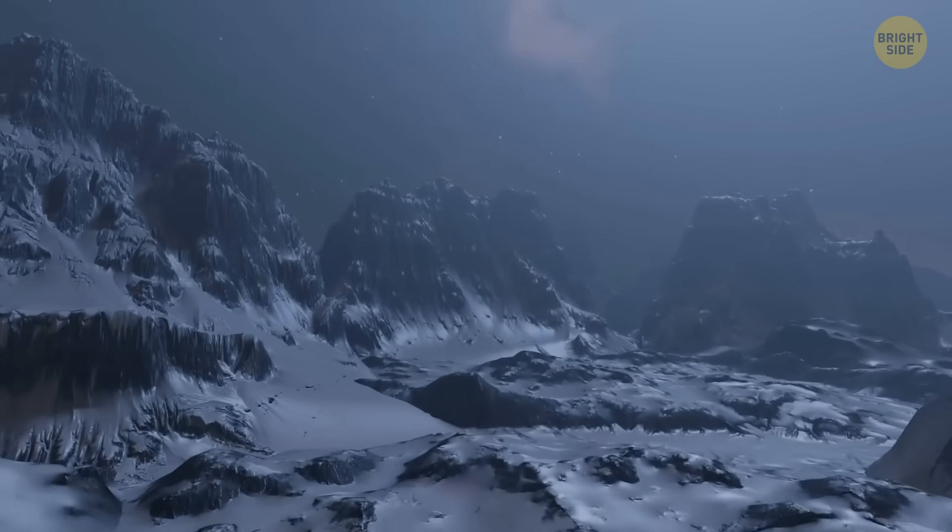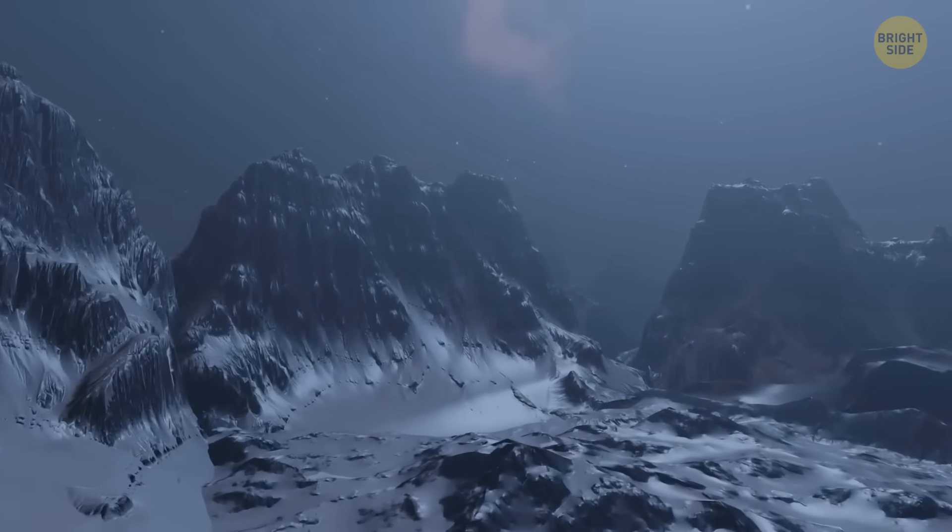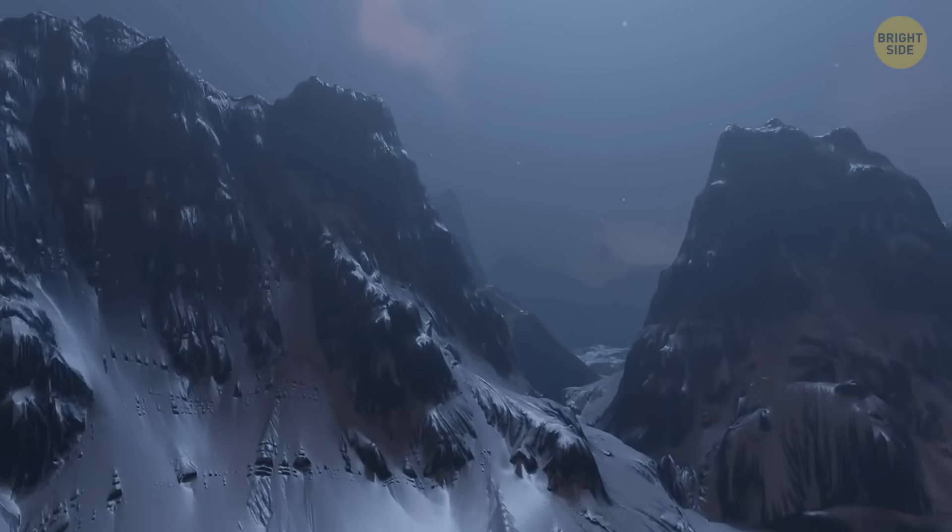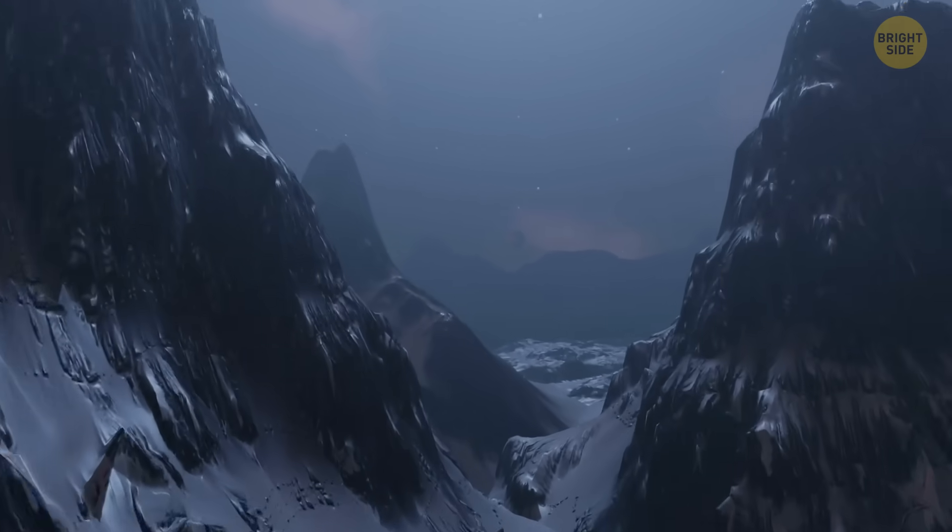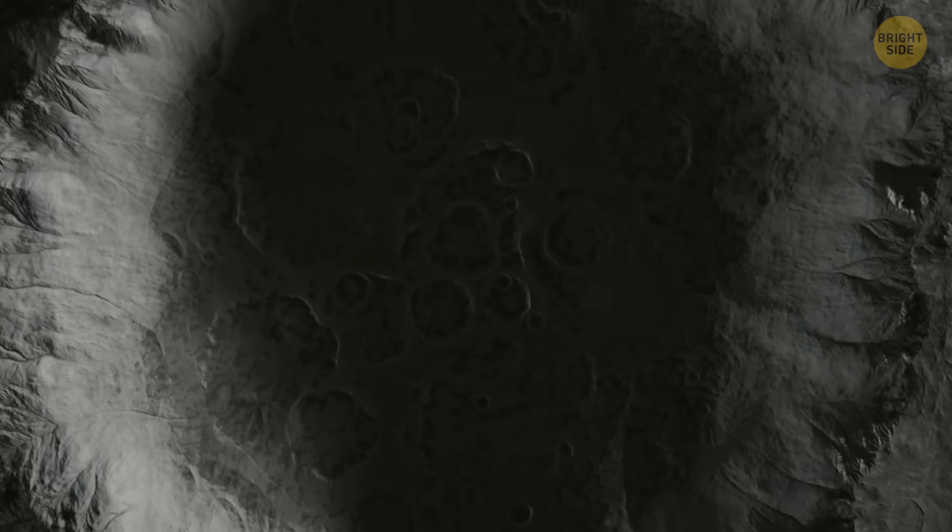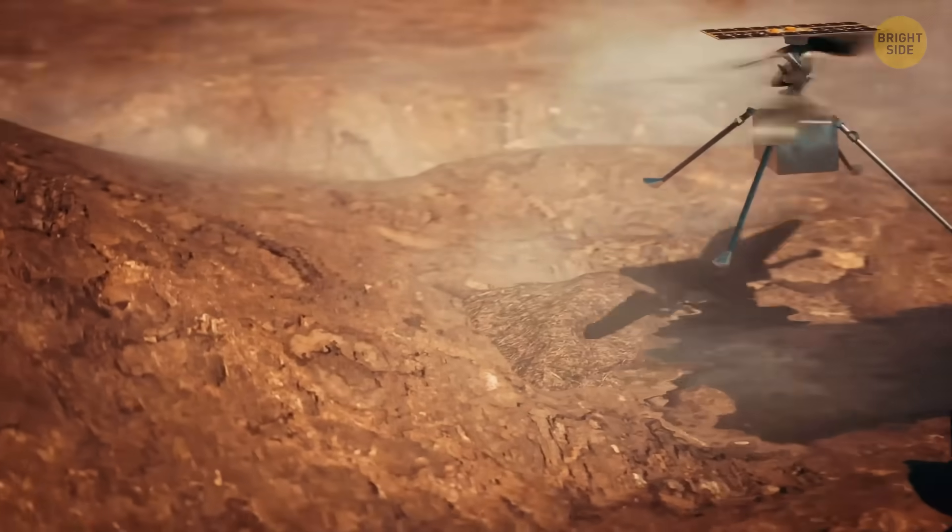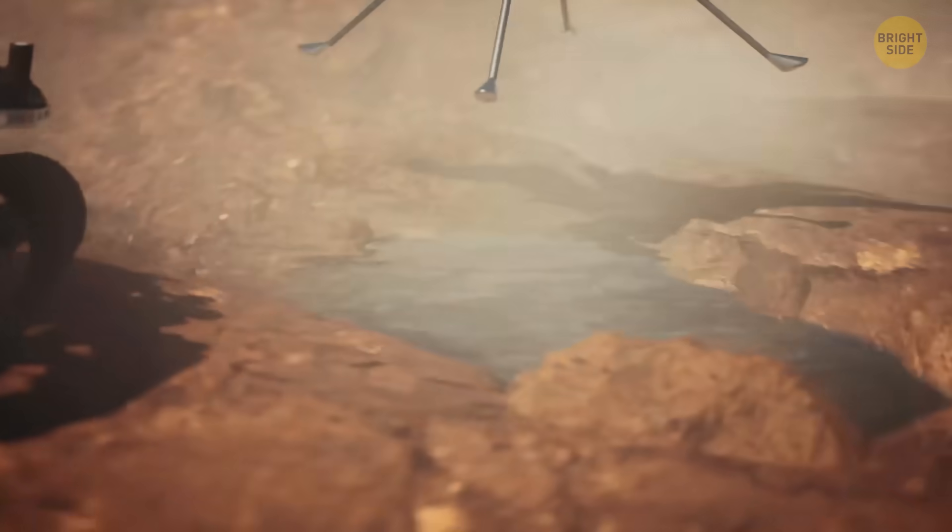Ariel's icy shell shows features that look recent, geologically speaking. That means the moon hasn't been completely frozen for all eternity. Beneath those fractures, there could still be small pockets or thin layers of liquid water.